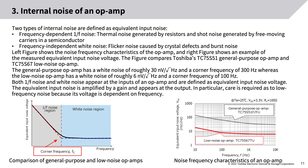The left figure shows the noise frequency characteristics of the op-amp, and the right figure shows an example of measured equivalent input noise voltage. Comparing Toshiba's TC75S51 general-purpose op-amp and TC75S67 low-noise op-amp: the general-purpose op-amp has a white noise of roughly 30 nV/√Hz and a corner frequency of 300 Hz, whereas the low-noise op-amp has a white noise of roughly 6 nV/√Hz and a corner frequency of 100 Hz. The equivalent input noise is amplified by the gain and appears at the output.